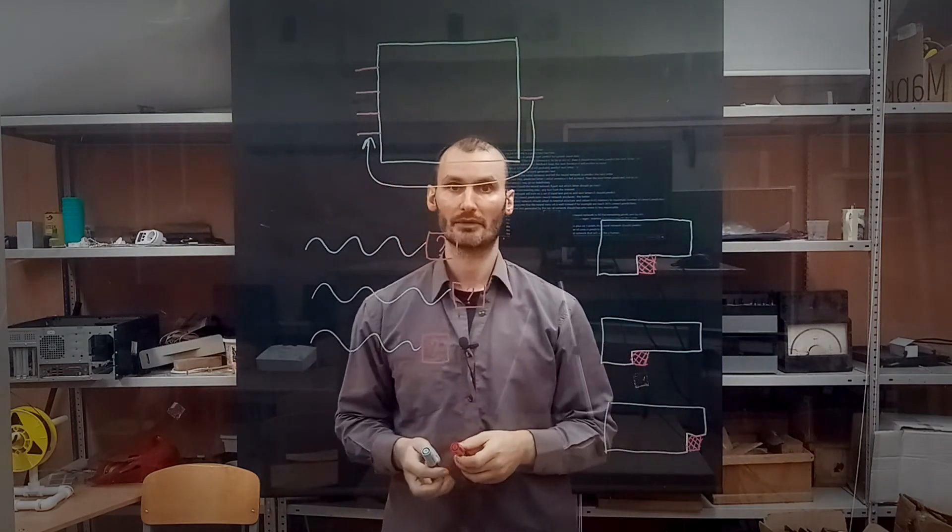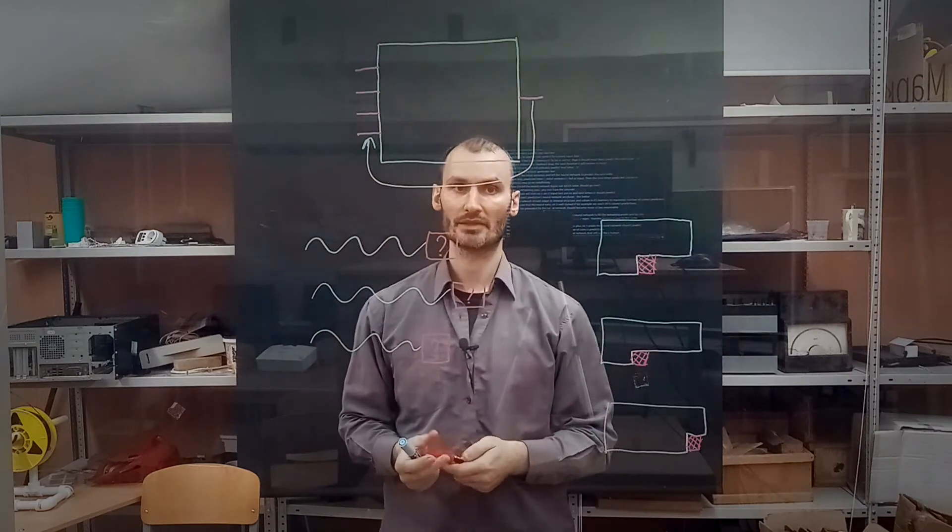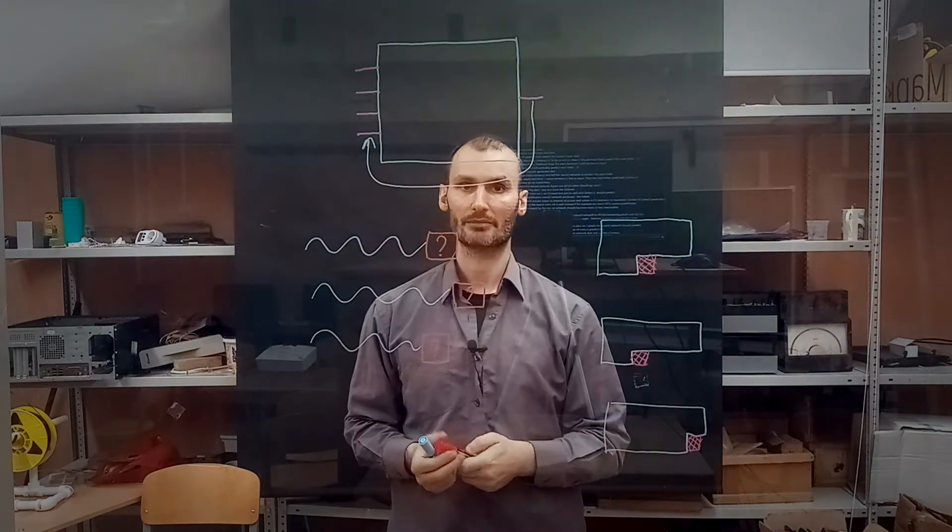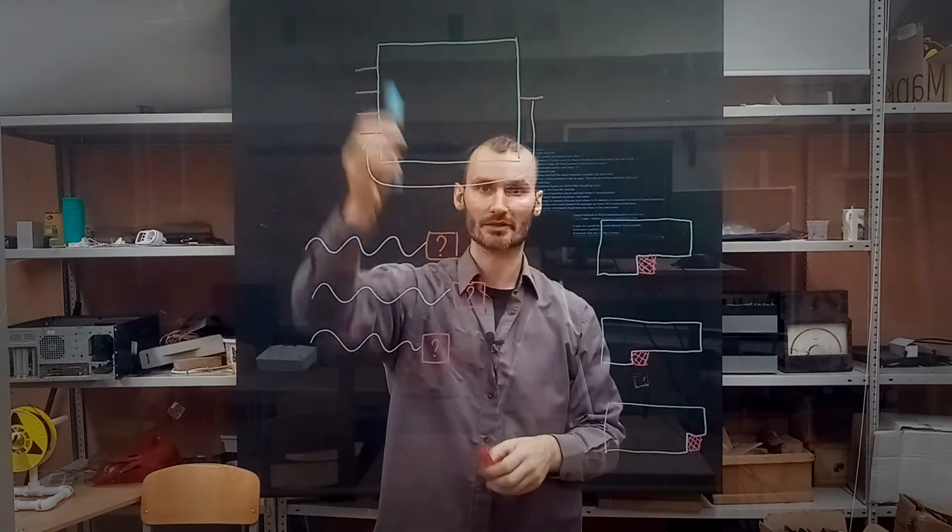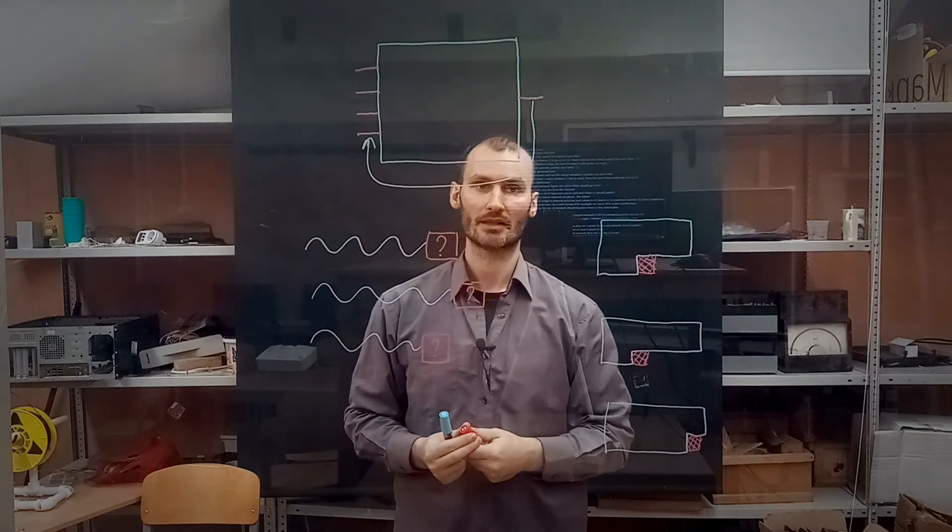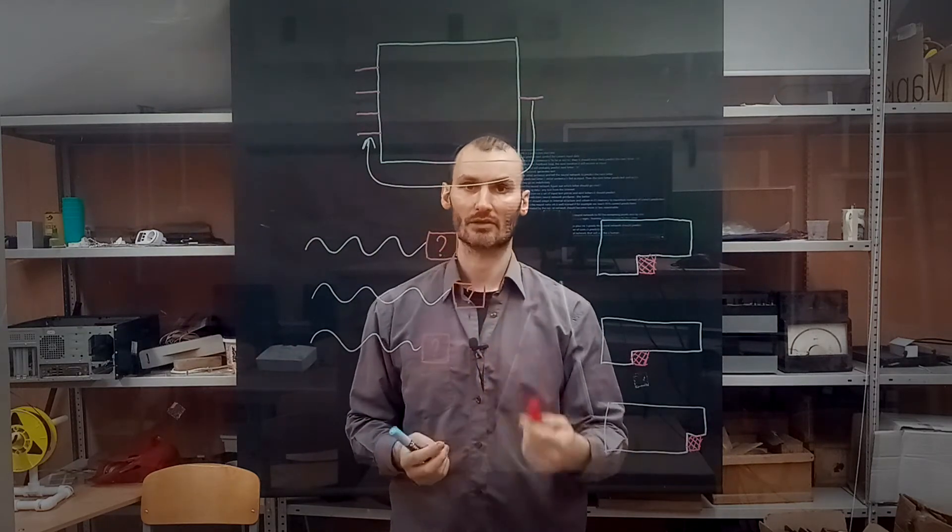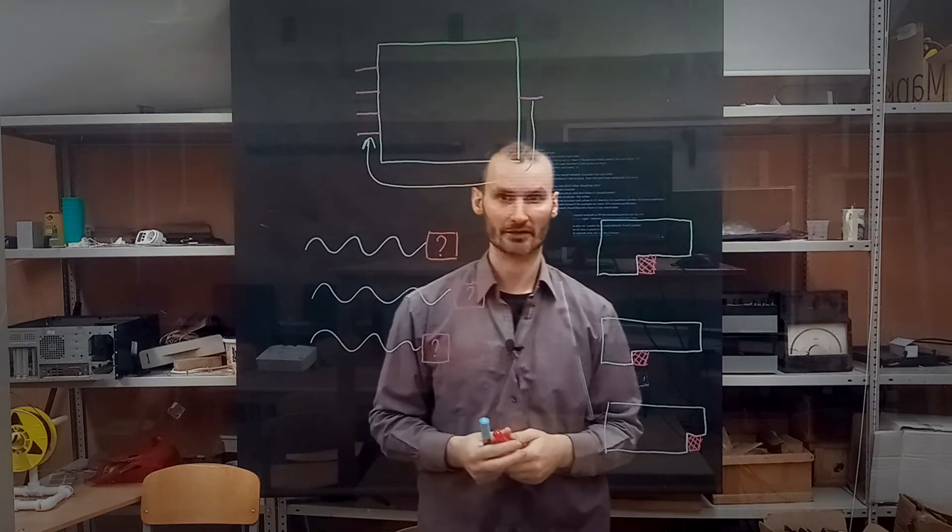We fed the initial sentence and told the neural network to predict the next letter. The next step, predicted letter plus initial sentence, is fed to the input and next letter is predicted and so on. The process may go on indefinitely.